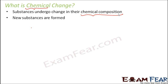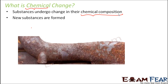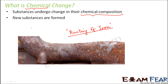You cannot reverse it back to the original substance. Let us look at the example of the rusting of iron. If iron objects are left open in the presence of air and water, a red colored layer forms over the iron. That red colored coating you see over iron is nothing but rust.